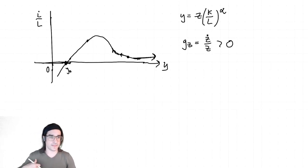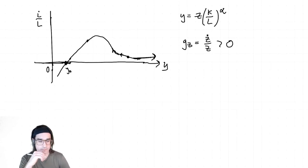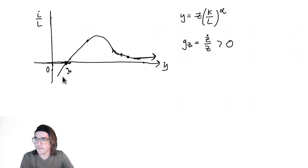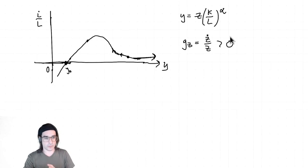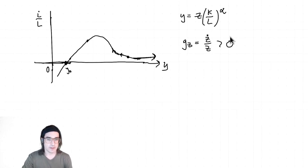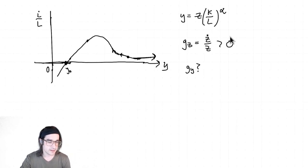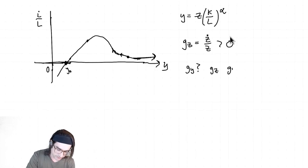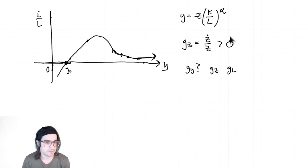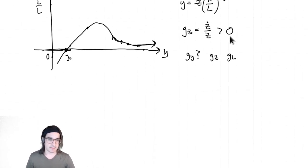Now we need to figure out: with Z going up and population also growing, those two are pushing against each other — Z going up increases y, but L going up is in the denominator and pushes it down. The question is which one wins out. One way to figure that out is to think in terms of growth rates. We want to find what G_Y is. Once we figure out G_Y in terms of G_Z and G_L, we're pretty much set. But to do that, we need a short mathematical aside on growth rate rules.